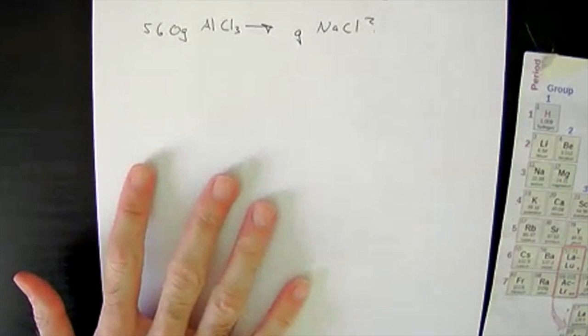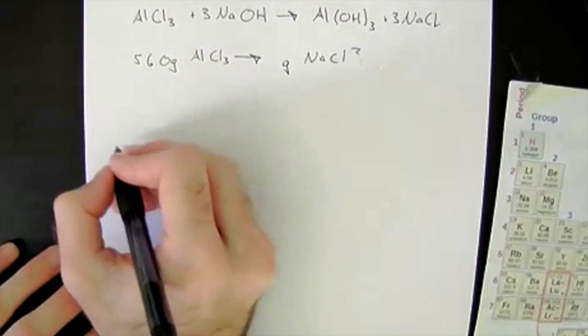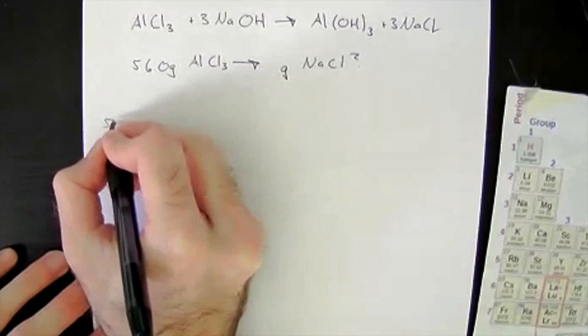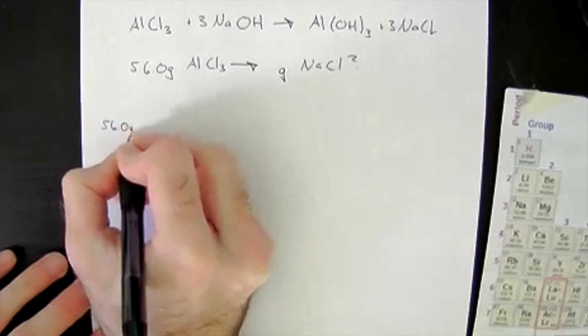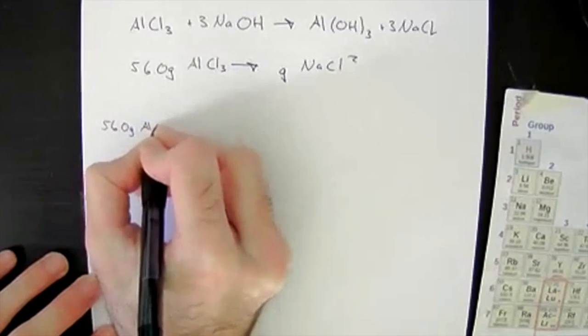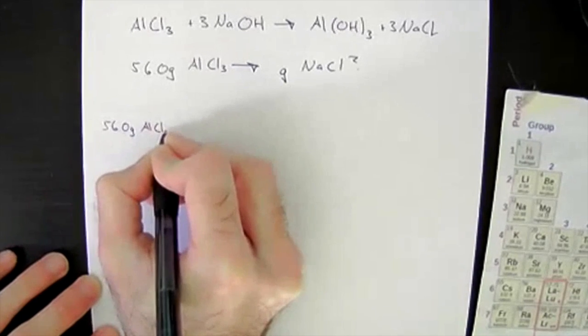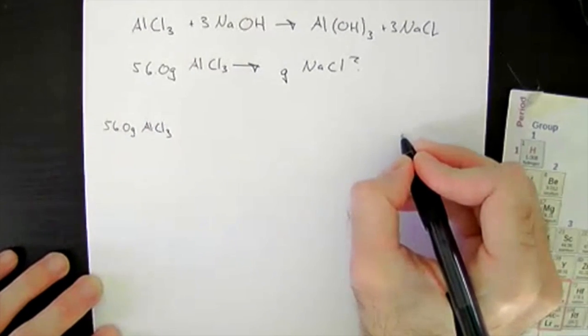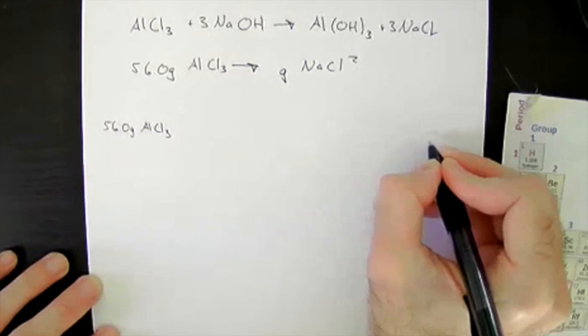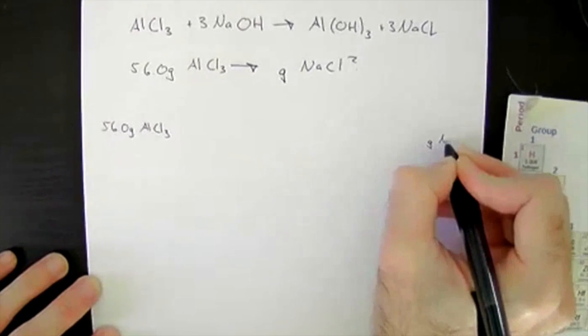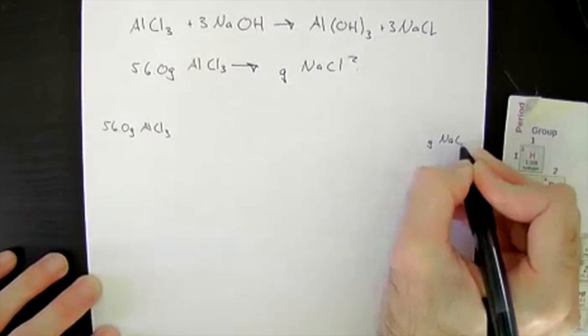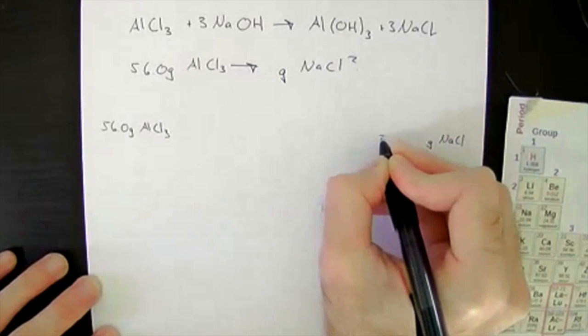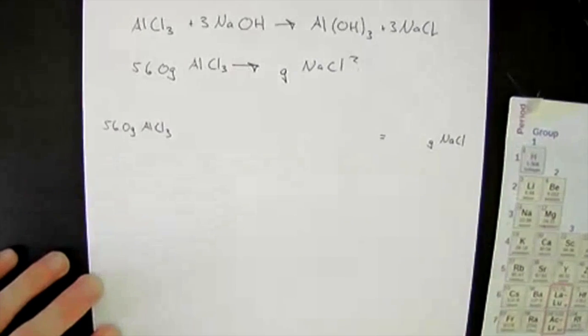So if I write this down, it's again a conversion style question, so I start with 56.0 grams of aluminum chloride and I want to end up with grams of sodium chloride, so I need to convert.